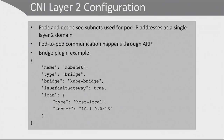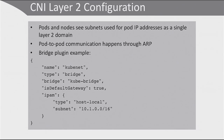CNI layer 2 configuration can be quite easy. The pods and nodes see subnets that are used for pod IP addresses as a single layer 2 domain — as if you are plugging computers to the same physical network. All of the computers can see each other directly. The pods and the nodes communicate by using ARP, the Address Resolution Protocol. In layer 2 based networking you need a bridge plugin — for example kubenet, type bridge, with the bridge named kube-bridge, default gateway set to true, and IPAM configuration set to host-local with a subnet. You just need to make sure that this plugin exists on all of the physical Kubernetes hosts.